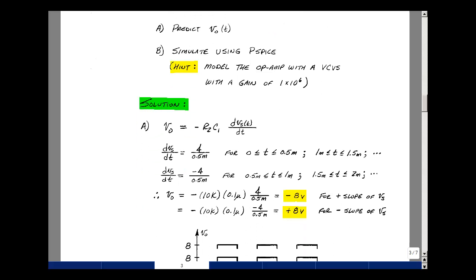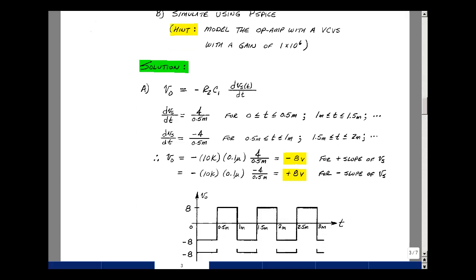So if we now take that and multiply it by minus R2 C1, first slope, I get a minus 8 volts. So when that's occurring, the output voltage is minus 8. And for the second case, then we have a negative R2 C1, and so the minus sign is canceled. I get a plus 8. So I get a square wave going between minus 8 and plus 8 with a period of one millisecond or frequency of one kilohertz.